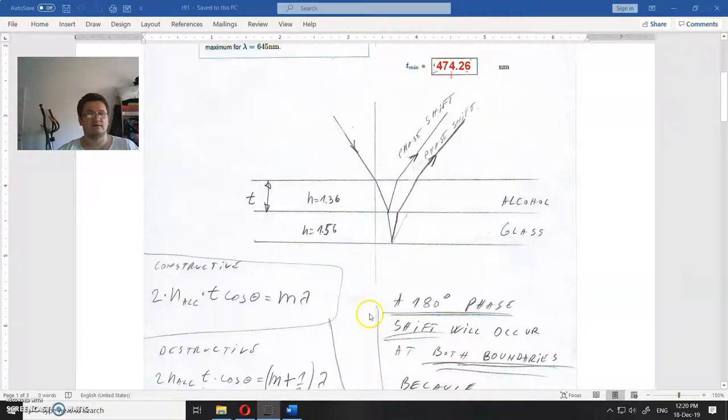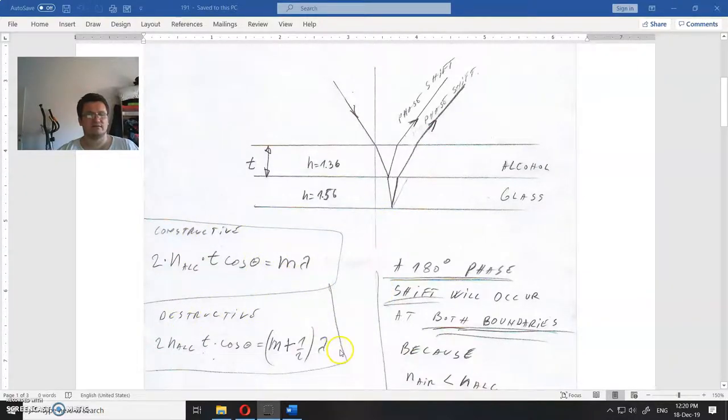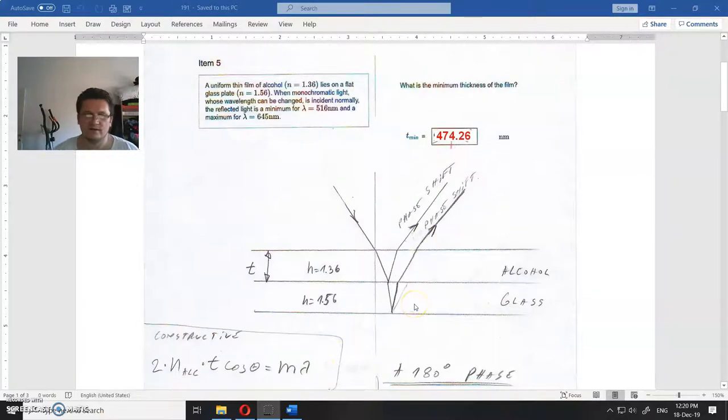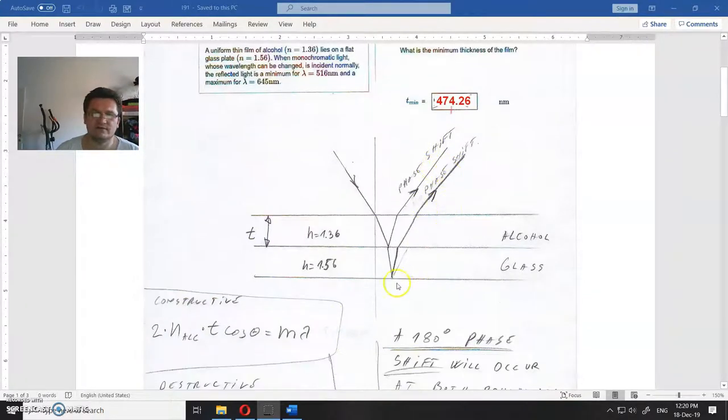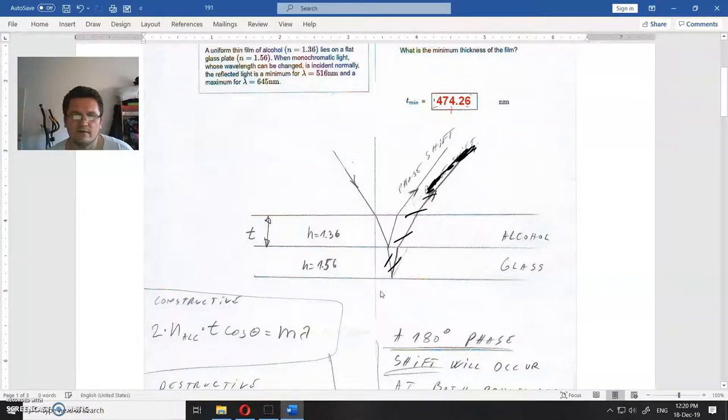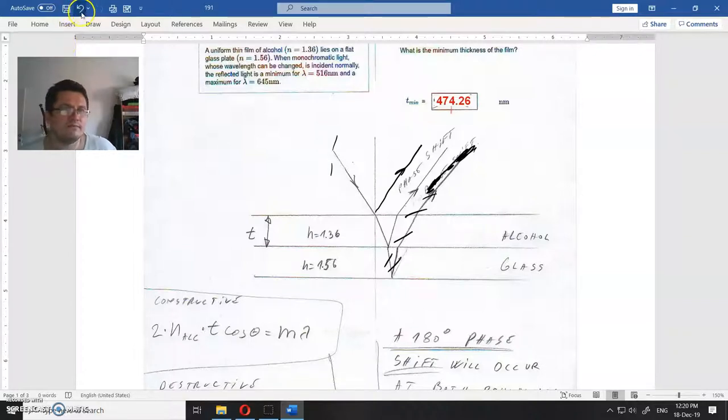This is for constructive, this is for destructive interference. But this picture is not very good because for this to interfere there will not be a phase shift here, so forget about this. Focus on these two - this reflected and this one reflected interfere somewhere up here. Both of them have a phase shift, so let's write phase shift here.